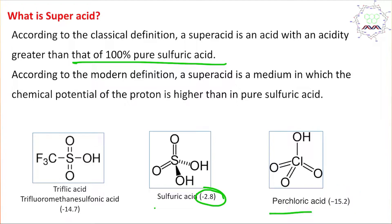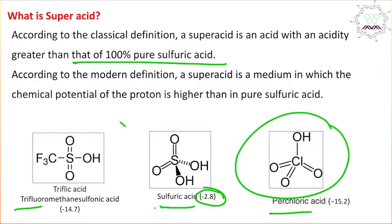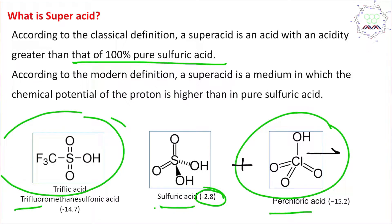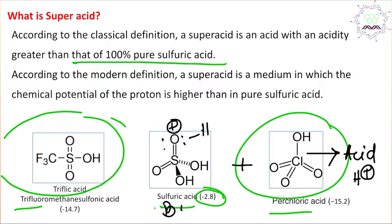Consequently, perchloric acid and trifluoromethanesulfonic acid (triflic acid) are stronger than sulfuric acid, so they are super acids. If you mix perchloric acid and sulfuric acid, perchloric acid acts as the acid, releasing H⁺, and sulfuric acid acts as the base, consuming that H⁺.